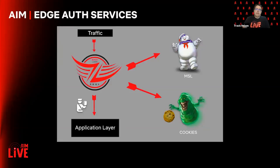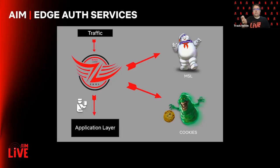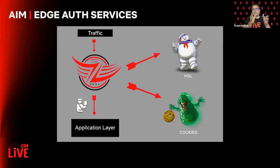Here is an expanded view of the edge authentication services. We have traffic coming into Zool, and the first thing we decide when traffic comes in is which protocol is being used. We have two primary protocols: one is MSL, which is a proprietary Netflix protocol, and the other is bearer tokens over TLS — which can be cookies. What we try to do is authenticate the request as much as we can within the scope of the Zool system. If we determine we need additional processing — things that take more time, like a device authentication or a cookie renewal — we send it off-box.